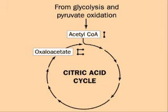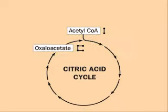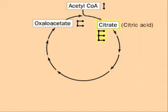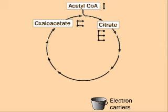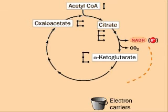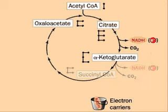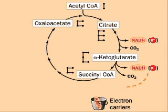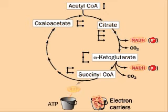In the citric acid cycle, a two-carbon compound reacts with a four-carbon compound to produce the six-carbon compound citric acid. In subsequent reactions, two carbons are lost as CO2, electrons are stored, and ATP is produced.